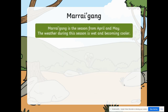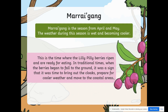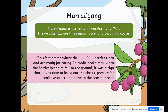Marai gang is a season from April and May. The weather during this season is wet and becoming cooler. This is a time when the lily pilly berries ripen and are ready for eating. In traditional times, when the berries began to fall to the ground, it was a sign that it was time to bring out the cloaks, prepare for cooler weather, and move to the coastal areas.